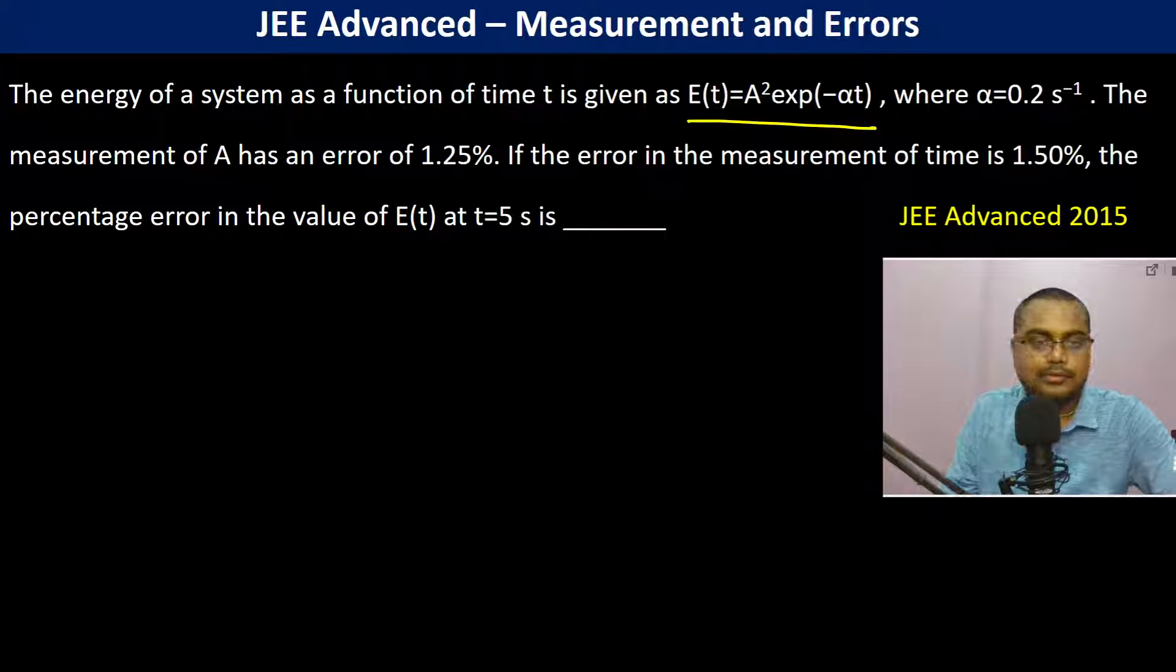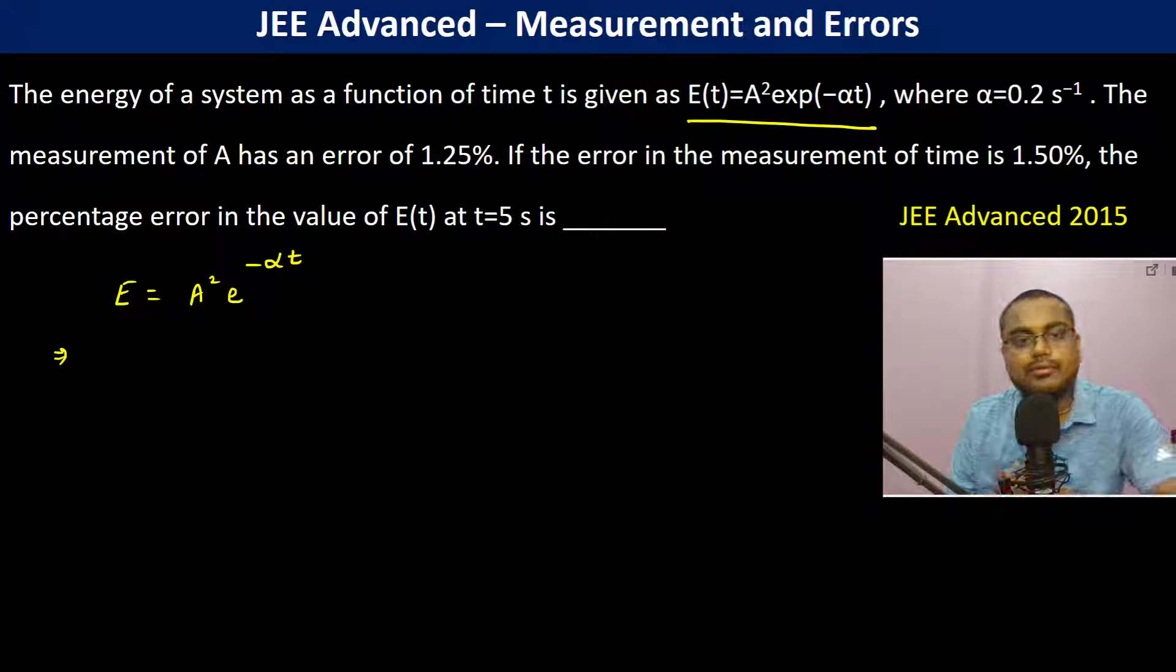Energy is given by this formula. So E becomes A square e to the power minus alpha t. Now what we have to find is we have to find the percentage error in the value of E(t).